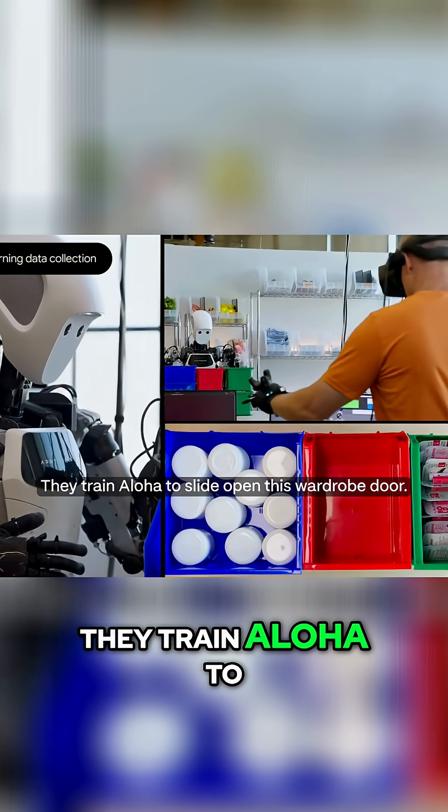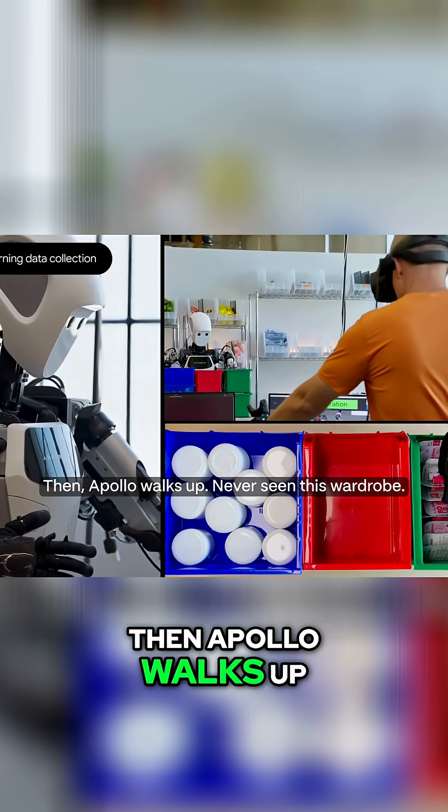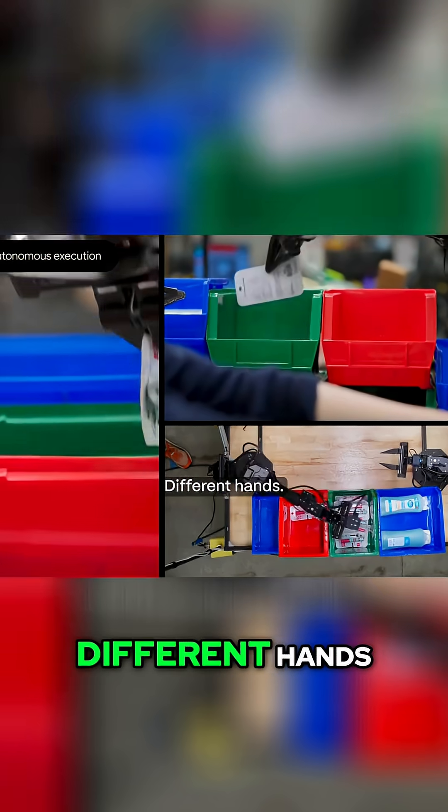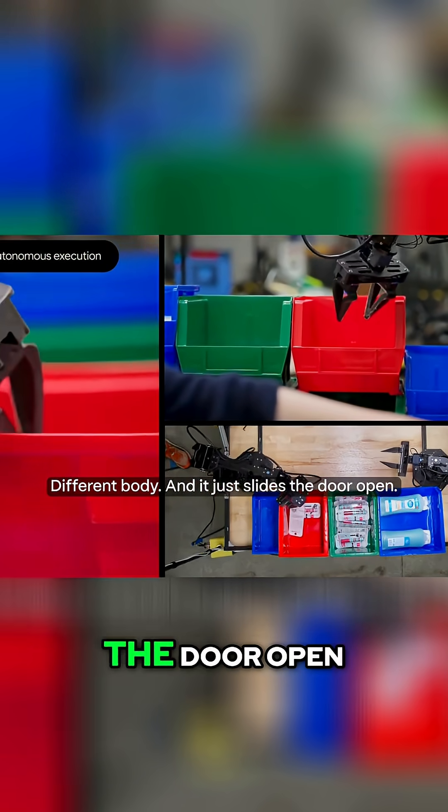They train Aloha to slide open this wardrobe door. Then Apollo walks up. Never seen this wardrobe. Different hands. Different body. And it just slides the door open.